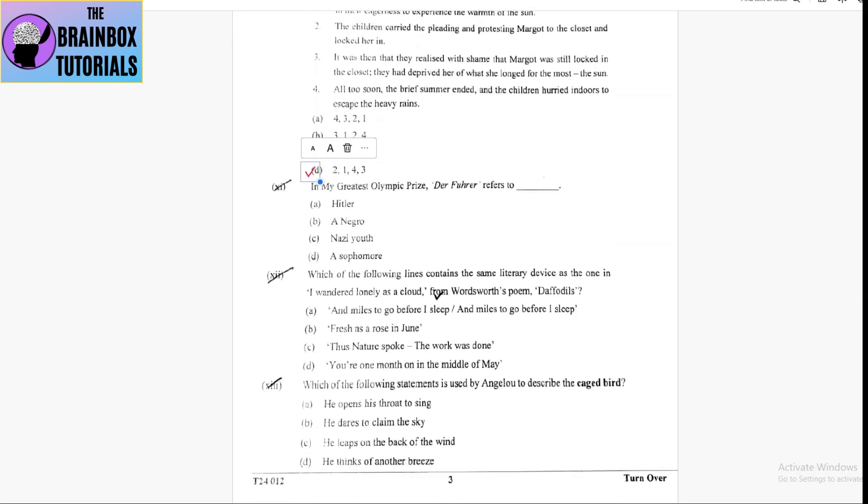Coming to number 11, in my greatest Olympic prize, Der Führer refers to, Der Führer means leader, Hitler was called this, by this name. So, option number A, Hitler is correct option.